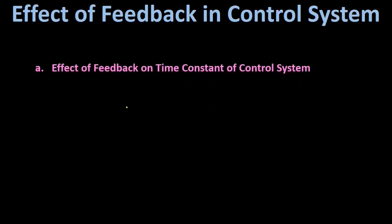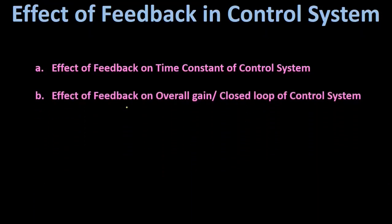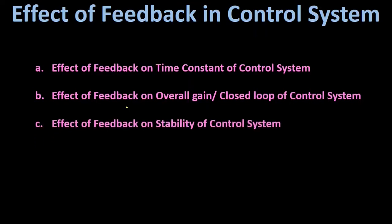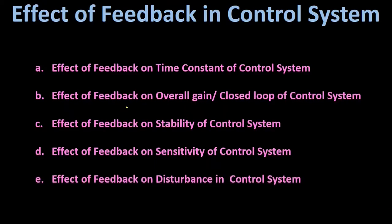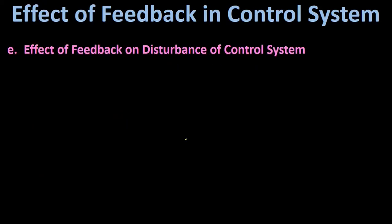This is the lecture series on effect of feedback in control system, which is divided into five parts: effect of feedback on time constant, on overall gain, on stability, on sensitivity, and on disturbance. In this lecture we are going to discuss the effect of feedback on disturbance in a control system. First, we should know what disturbances in a control system are.